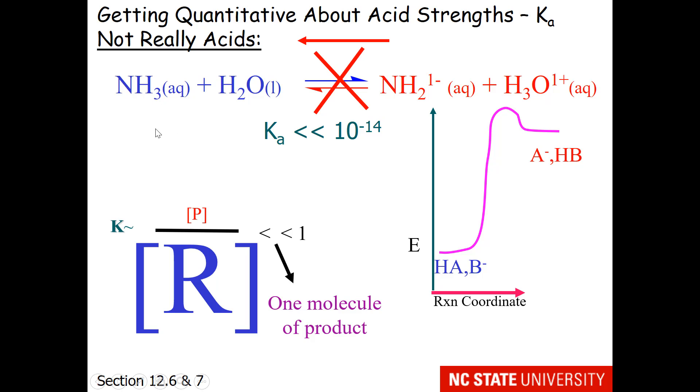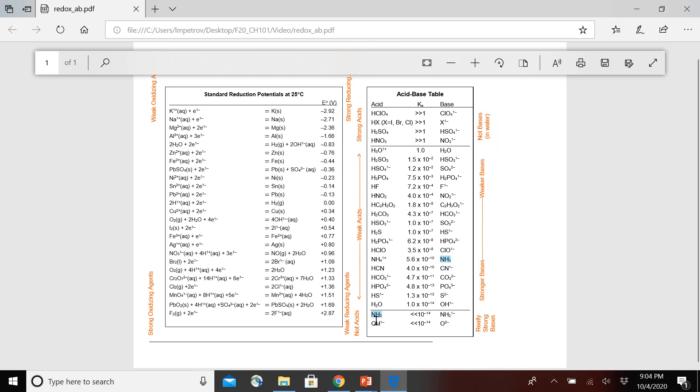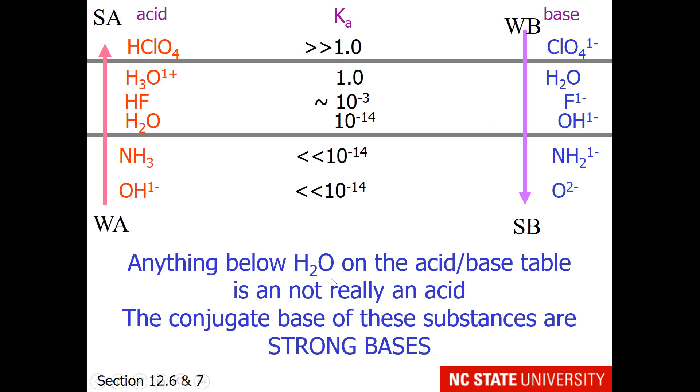But if you look at the acid base table, you'll see that it's actually a pretty good base. Here you see ammonia listed as a terrible acid and a relatively decent base. So anything below water on the acid base table is not really an acid. The conjugate bases of these substances are extremely strong bases. And these materials, ammonia and hydroxide, are relatively strong bases themselves.